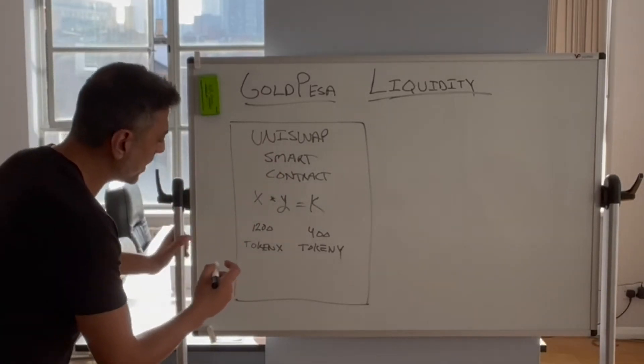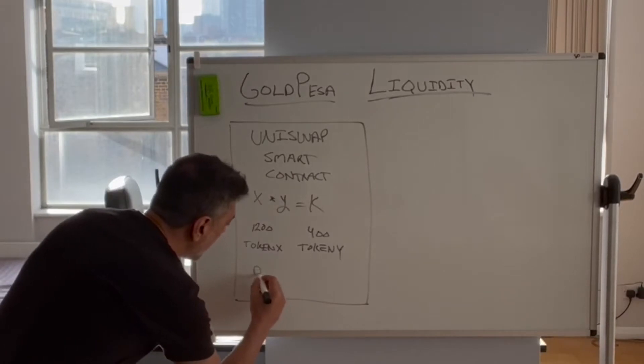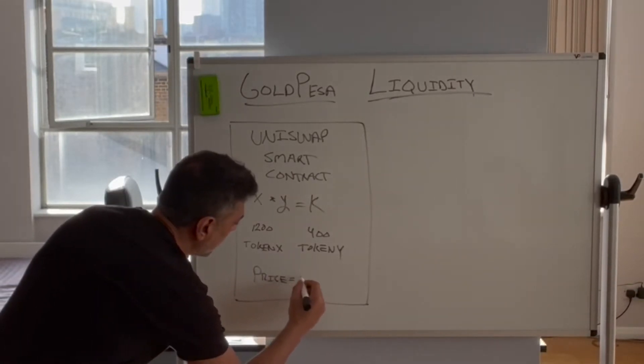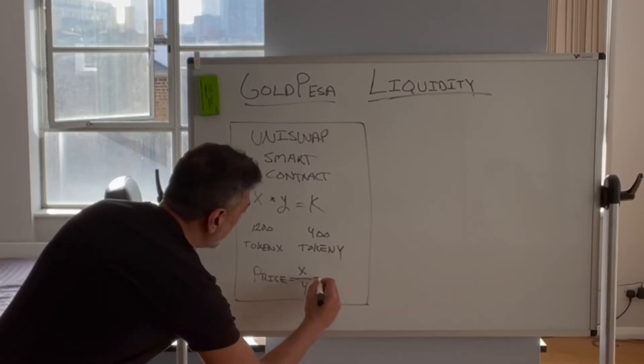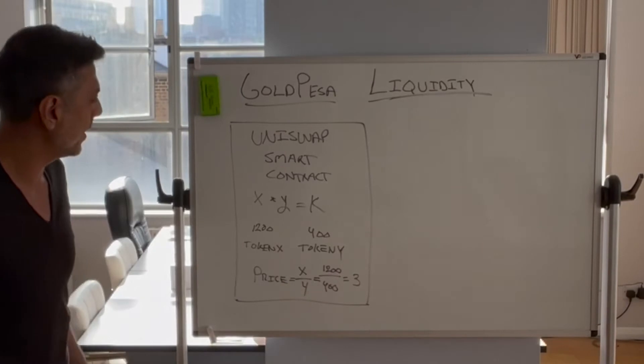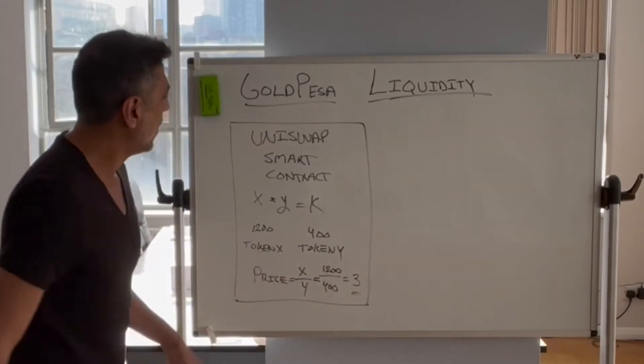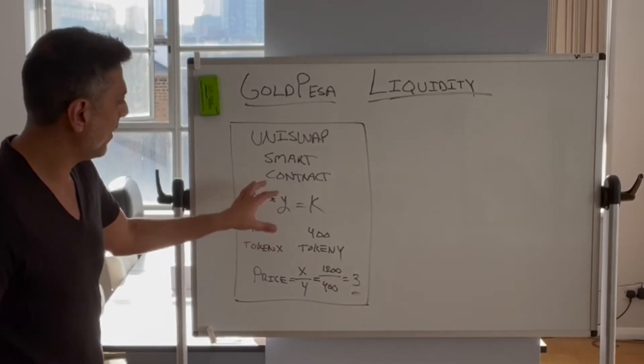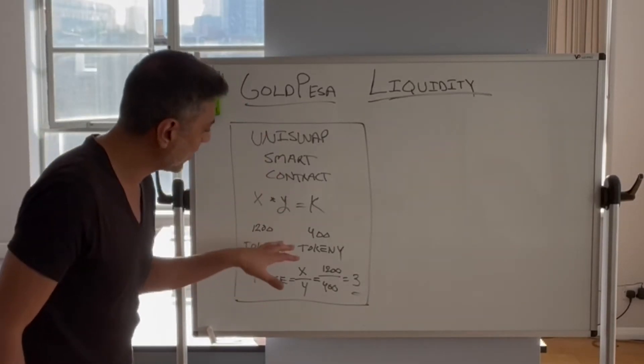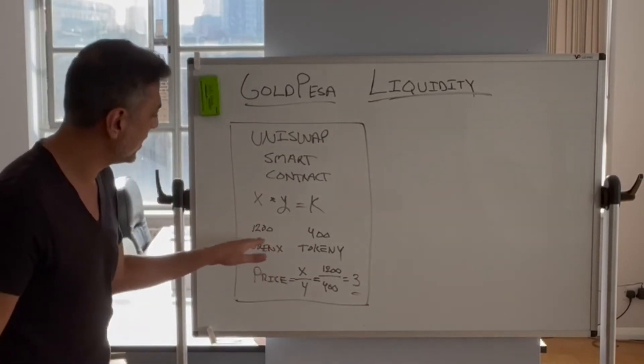If you were to give a price of this token to start, it would be x divided by y. In which case it's 1200 divided by 400, which equals 3. So this would be the starting price of this token pair x and y, given that the liquidity in the smart contract is as follows.